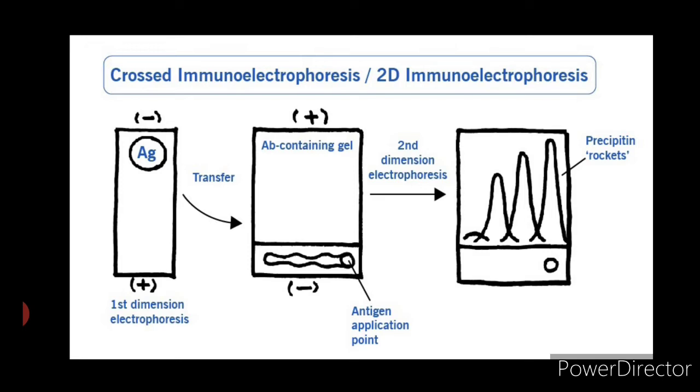after which they are electrophoresed into an antibody containing gel at right angles to the direction of the first electrophoresis. The technique can be used for the analysis of serum proteins.